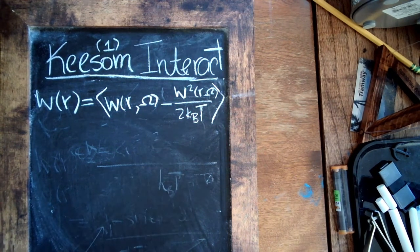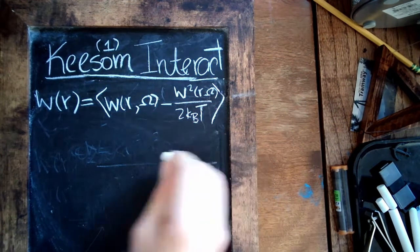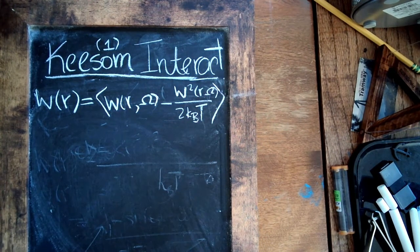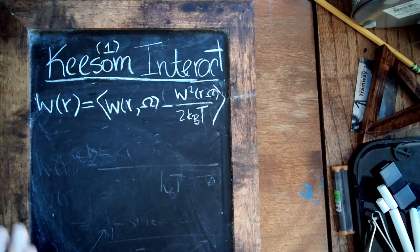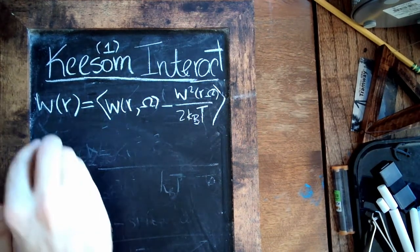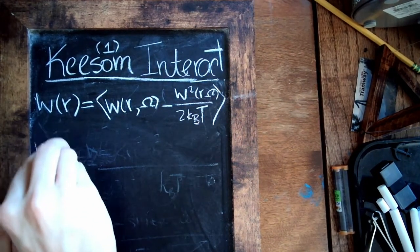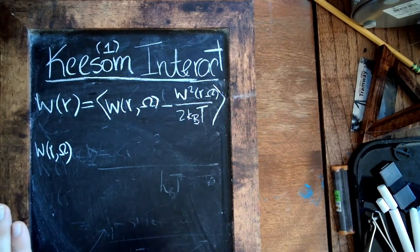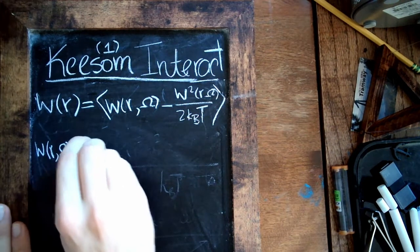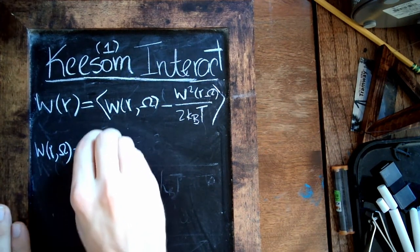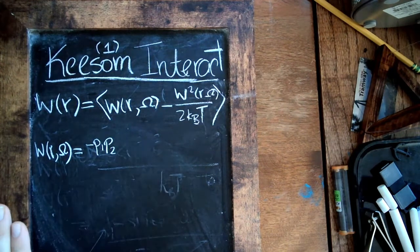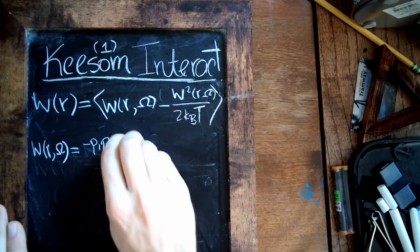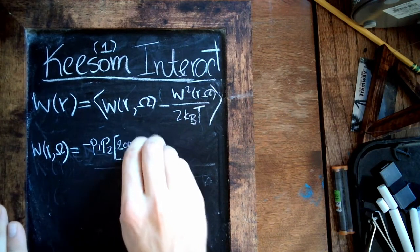So if we're looking to perform an average over angle of these two terms, first we have to actually write down what is W(r,omega) for our case. So I'll just write down the magnitude of it without really explaining the geometry of where it comes from, but we'll come back to it later when we revisit dipole-dipole interactions. So it's simply the magnitude p1·p2 of both of the dipoles, and we get this angular dependence: 2 cosine theta 1 cosine theta 2.